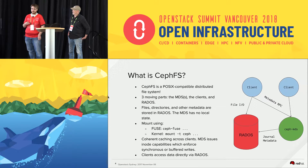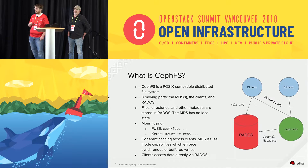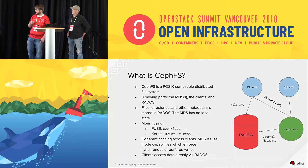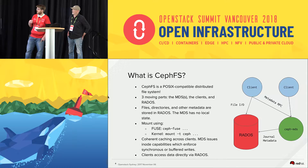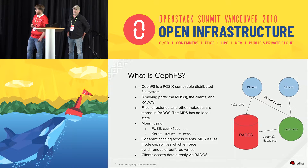CephFS is a POSIX-compatible distributed file system, providing the same file system API and consistency semantics required by POSIX. It has three primary moving parts: the metadata server, which handles metadata updates; the client, which mounts the file system; and Rados, where all data and metadata is stored. One innovative aspect of Ceph is that clients can push file IO directly to Rados without going through the metadata server, reducing load. The MDS also has no local state — all metadata is stored in Rados.